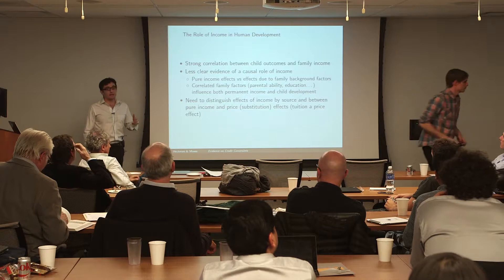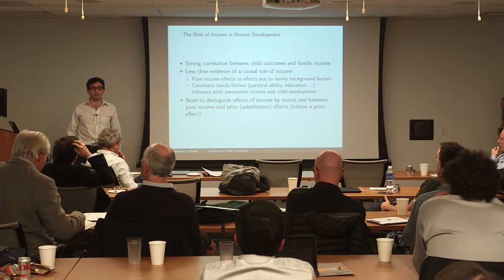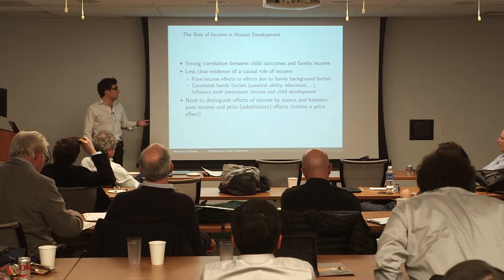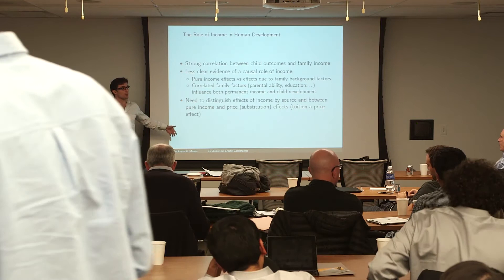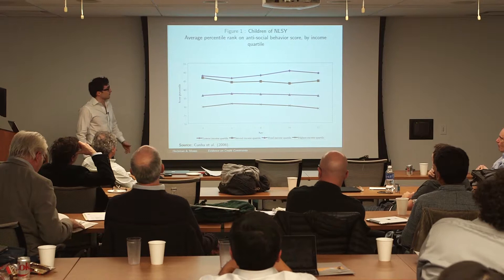A second important aspect to analyze, especially from a policy perspective, is to distinguish what type of income affects child development most — distinguishing between what can be considered a pure income effect versus a combination of a wealth effect and a substitution effect, either in the price of some investment goods such as a tuition subsidy, or in the price of time — for example, policies that affect labor supply decisions.